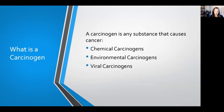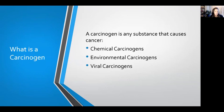A carcinogen is any substance that causes cancer. These may be chemical, such as asbestos, arsenic, benzene, or chemicals found in tobacco products. They may be environmental, such as things found in pollution, ultraviolet light, or radon gas. Or they may be certain kinds of viruses.